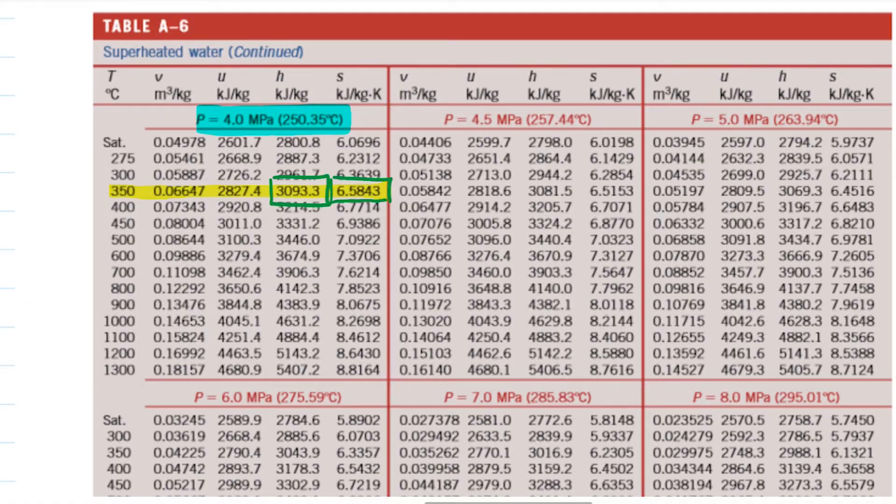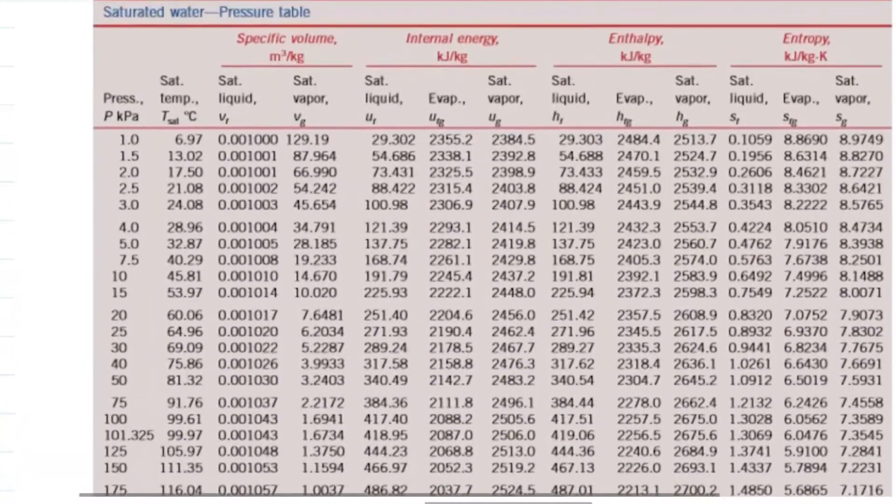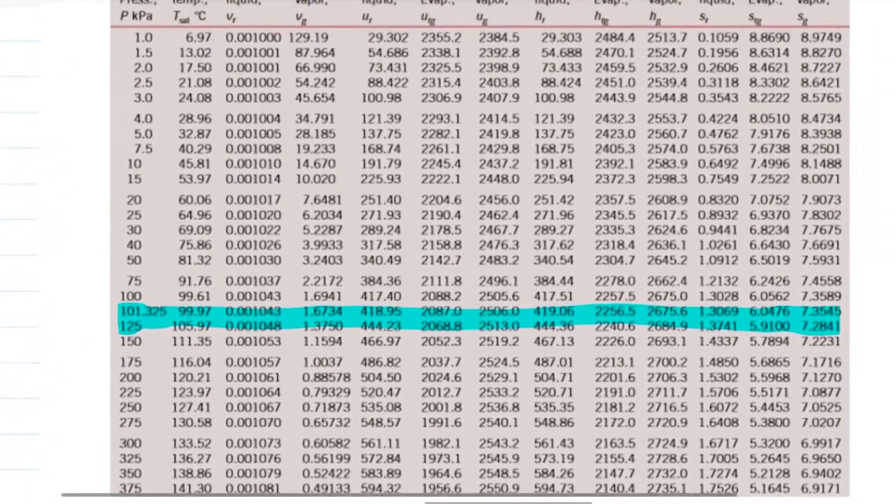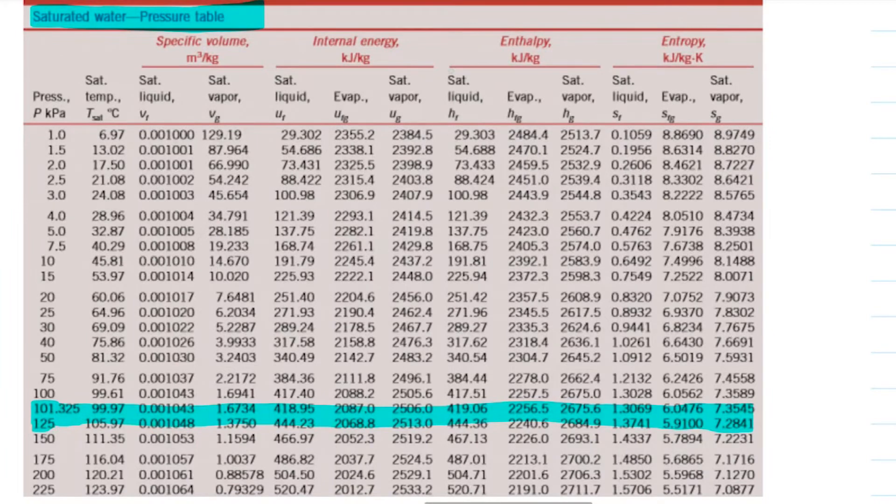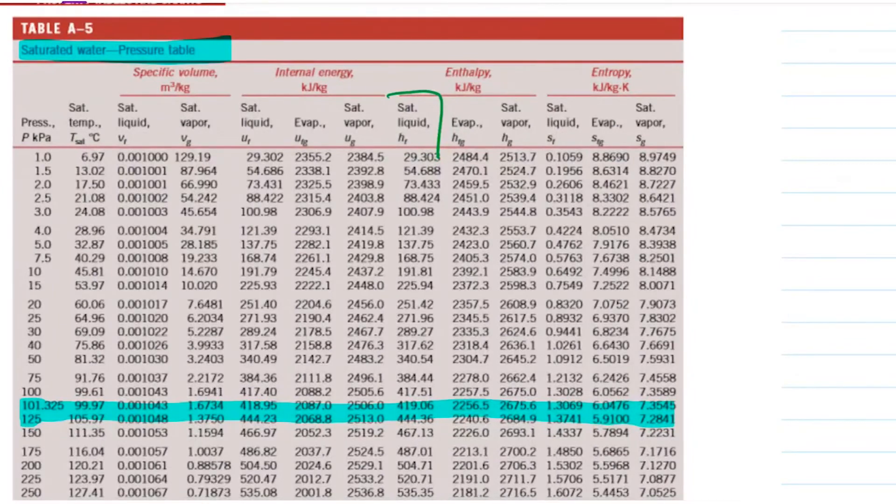Now let's go ahead and grab the enthalpy for my saturated vapor that is at 120 kilopascals. Here we are, saturated vapor pressure table, 120. I don't have 120, I have 125 and 101, so guess what, a little interpolation. I'm going to find a value between these two fellas here. I'm just interested in the entropy.